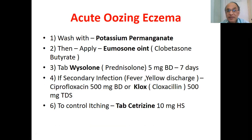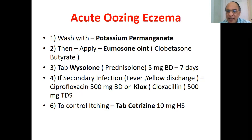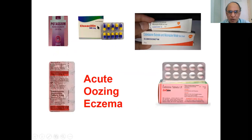In acute eczema: wash the particular patch with potassium permanganate solution, then apply Ultmosone ointment — a steroid ointment, clobetasone butyrate — externally. Internally, tablet Wysolone, which is prednisolone 5 mg BD for seven days. If secondary infection is present — diagnosed by fever and yellow-colored discharge — give ciprofloxacin 500 mg BD, or cloxacillin 500 mg TDS. To control itching, give antihistamine tablet cetirizine 10 mg at night, as it can cause drowsiness.